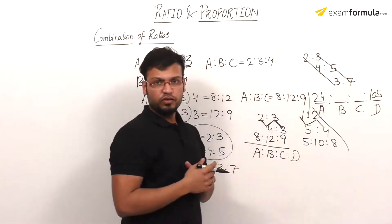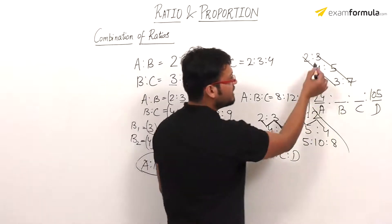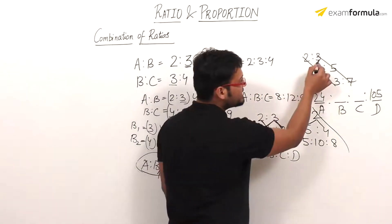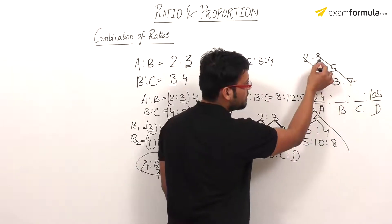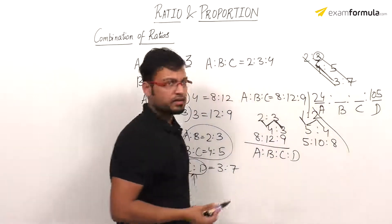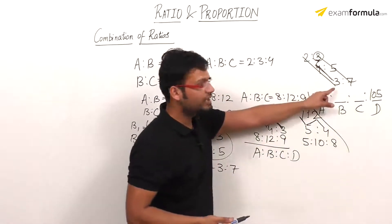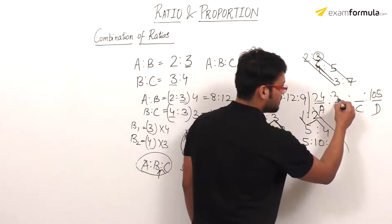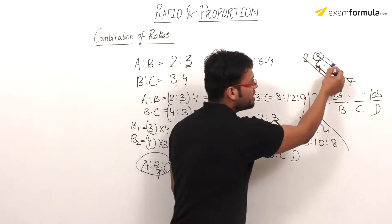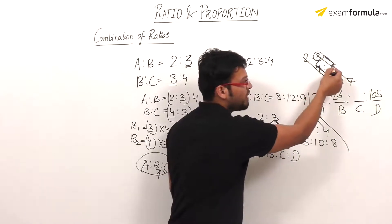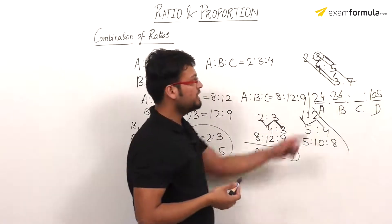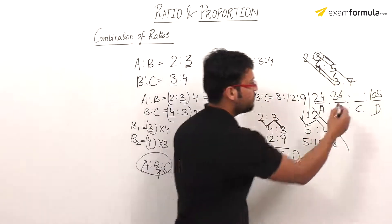Now we find B and C values. For B, I take the first denominator and multiply by the remaining numerators: 3 times 4 times 3 equals 36. For C, I take the first two denominators and the last numerator: 5 times 3 times 3 equals 45. So the combined ratio A ratio B ratio C ratio D is 24 ratio 36 ratio 45 ratio 105, showing that the trick is really a time-saving method.